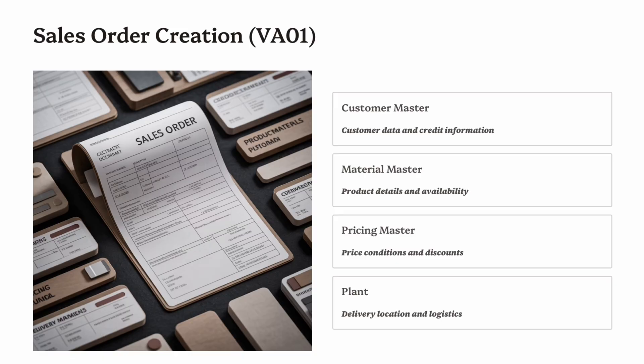Step 2: Sales Order Creation (VA01). Once the customer accepts your quotation, the next step in the order-to-cash process is to create a sales order in SAP using transaction code VA01 — the core document that controls everything that follows. The sales order contains all critical information: customer details from the customer master, material and quantity from the material master, delivery dates and plant location, pricing conditions from the pricing master, and payment terms.